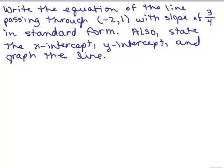If we know the slope and the y-intercept, we'll also be able to write it in slope-intercept form. Since we're looking for standard form, I'm going to use the point-slope formula since we're given a slope and a point. Remember the formula: y minus y₁ equals m times x minus x₁. We will be plugging in 3-fourths for the slope.